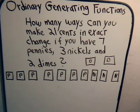In this problem we want to consider how many ways can you make 21 cents in exact change if you have 7 pennies, 3 nickels, and 2 dimes. And we want to solve this problem now by using an ordinary generating function technique.